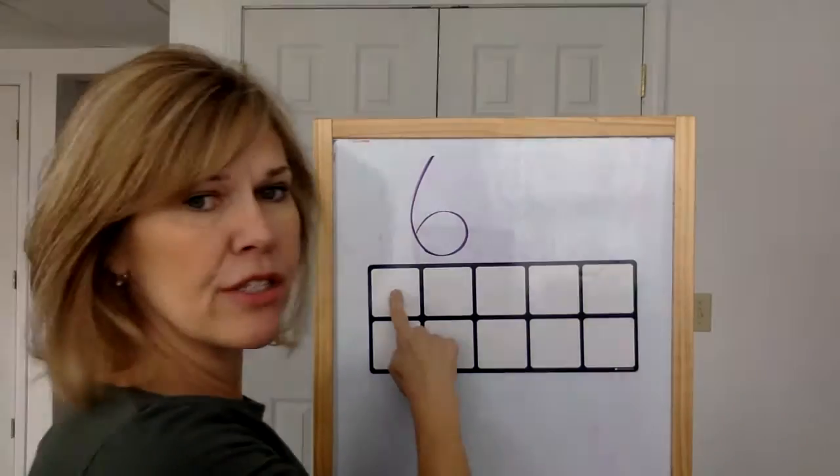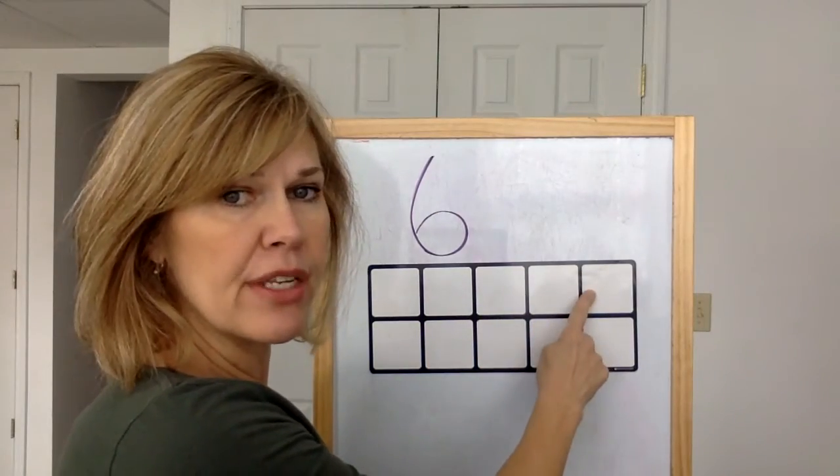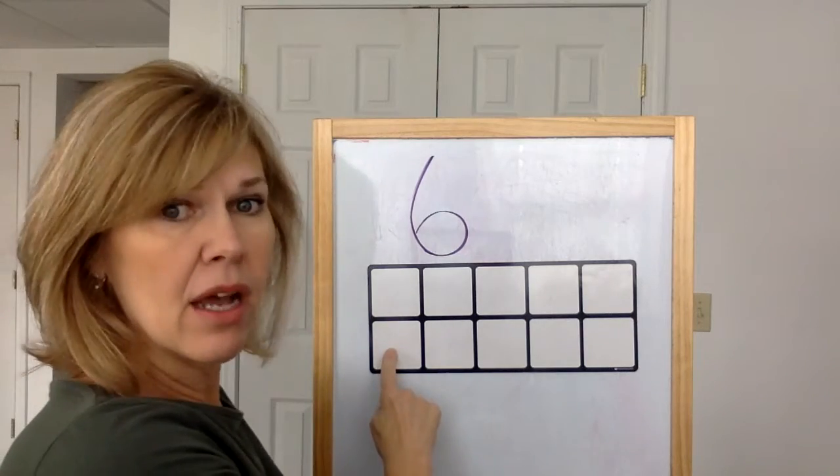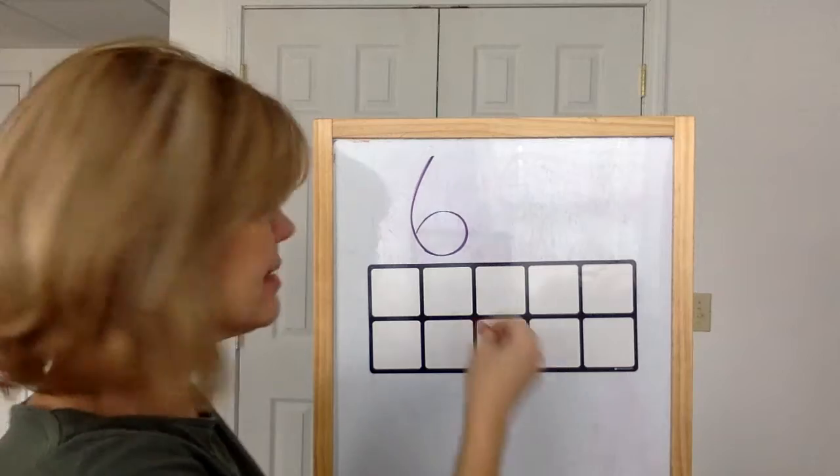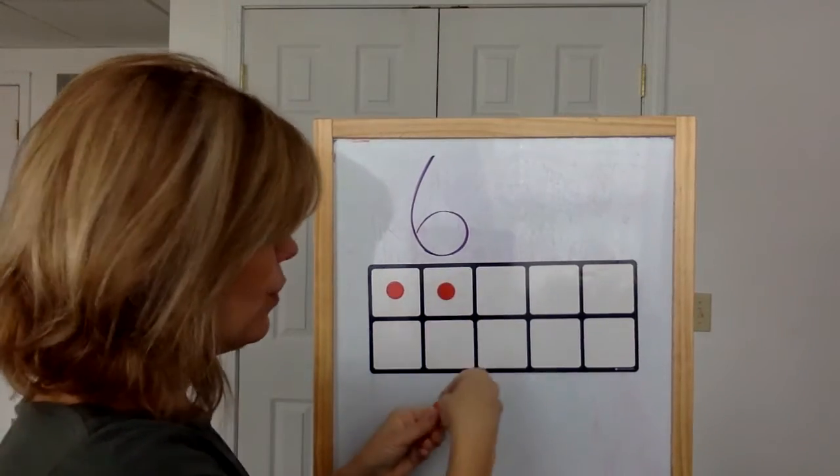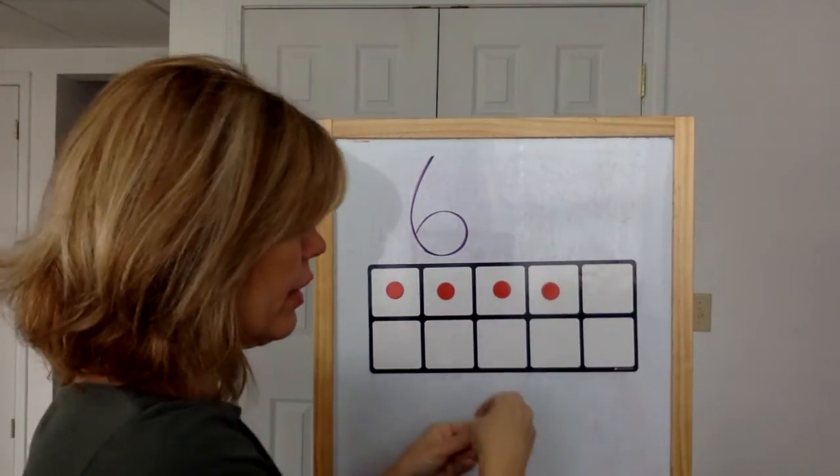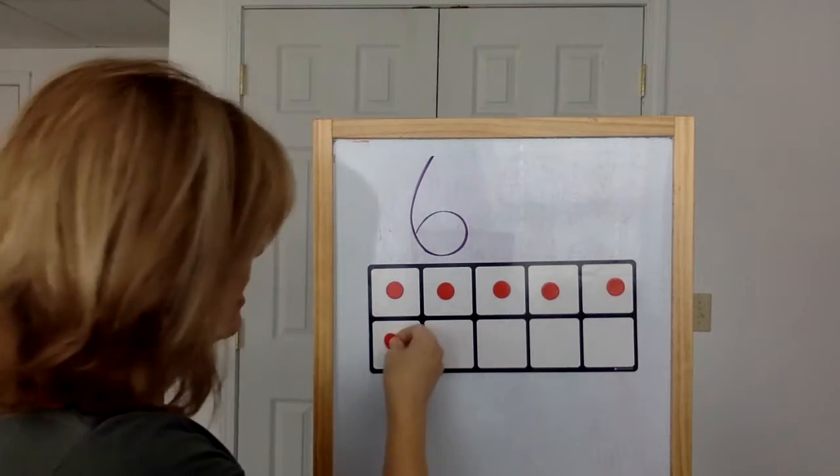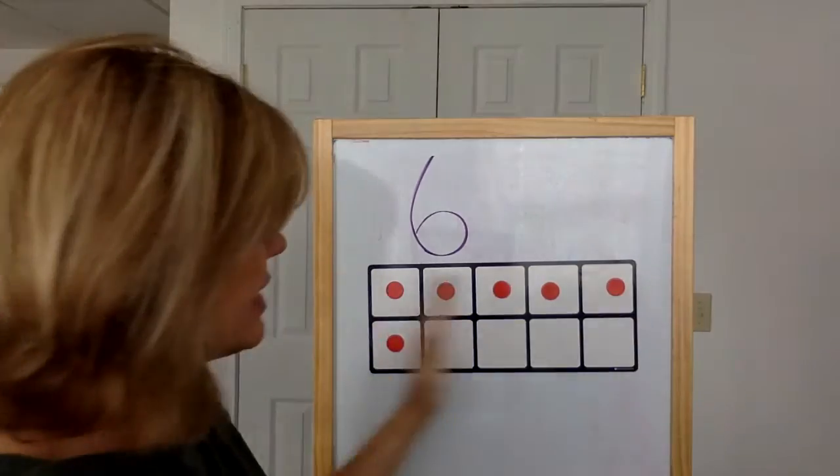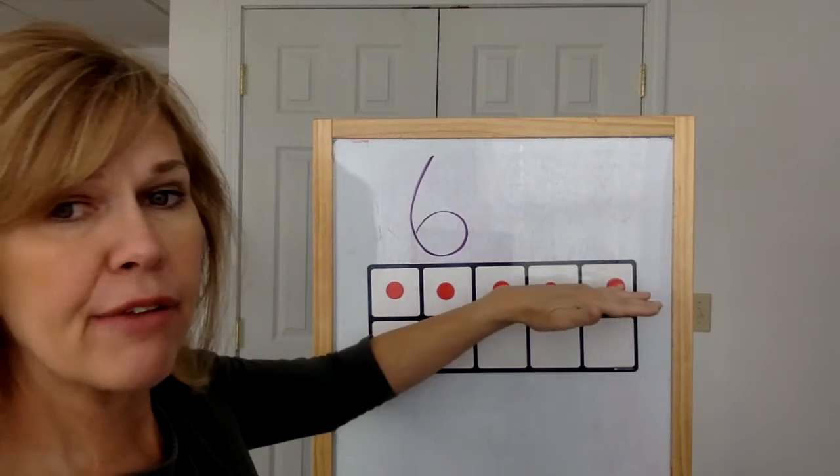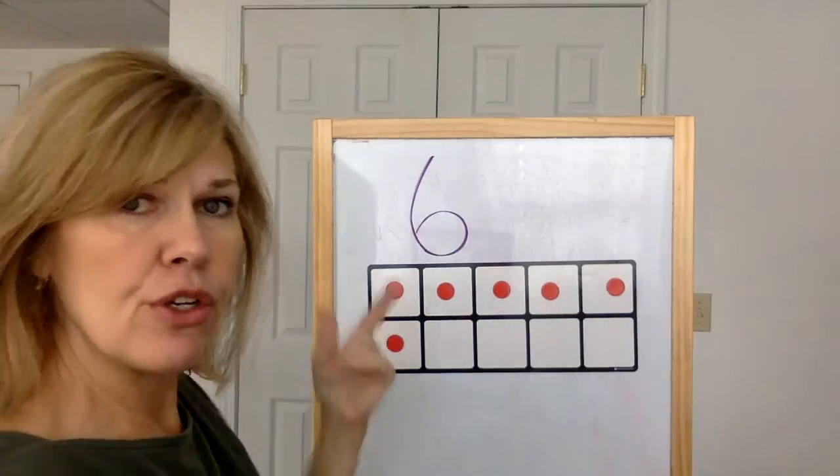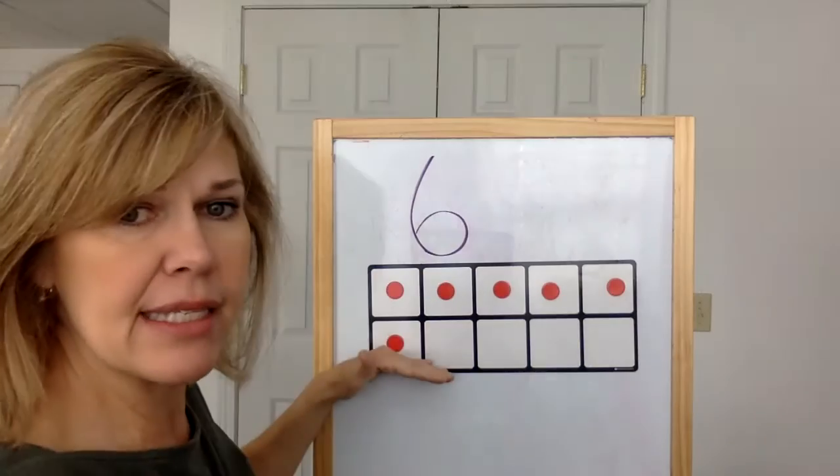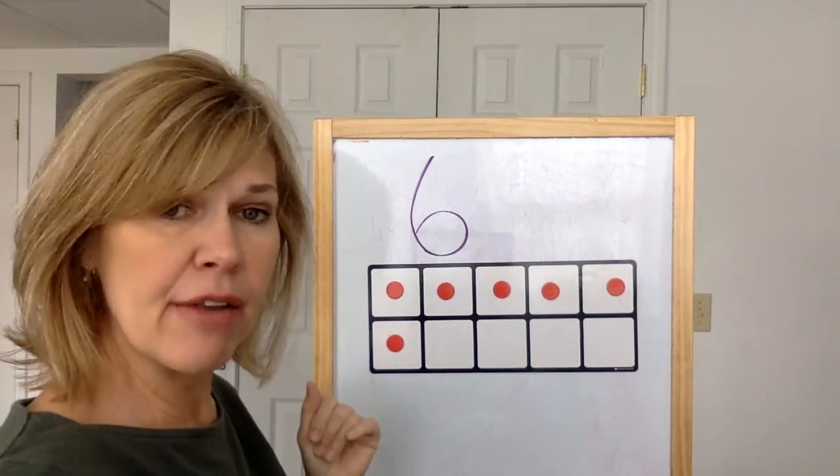I would put a red circle on every square on the top row, and 1 on the bottom row. I'm going to put them on without skipping any spaces. 1, 2, 3, 4, 5, 6. Now whenever you see a 10 frame that has one whole side filled, you'll know that's 5. And if there's one more, you just think in your head, 5, 6. So that's 6 on a 10 frame.